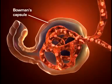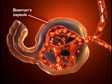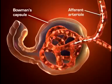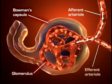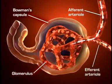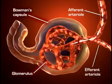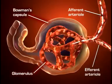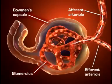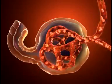Blood flows into the glomeruli through the afferent arterioles, and blood flows out of the glomerulus through the efferent arterioles. The afferent and efferent arterioles regulate glomerular capillary pressure by selectively dilating or constricting.